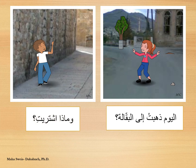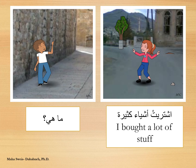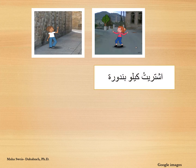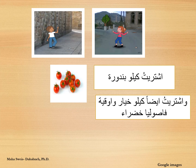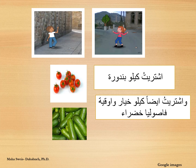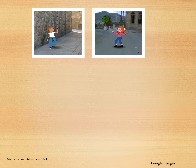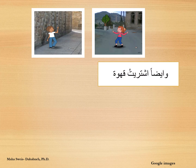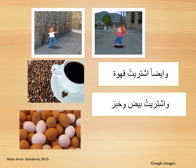وماذا اشتريتي؟ اشتريت أشياء كثيرة. ما هي؟ اشتريت كيلو بندورة. اشتريت أيضاً كيلو خيار. وأوقيت فصولية خضراء. وأيضاً اشتريت قهوة. واشتريت بيض. وخبز.